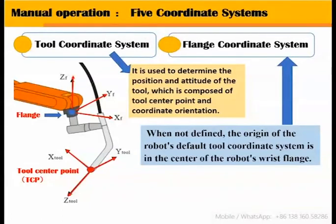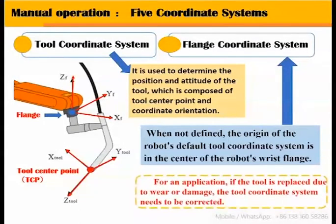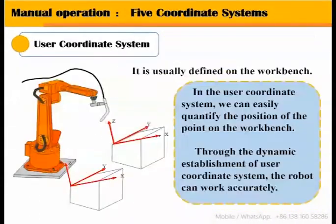The tool coordinate system is used to determine the position and attitude of the tool, and is composed of the tool center point and coordinate orientation. When not defined, the origin of the robot's default tool coordinate system is at the center of the robot's wrist flange — this is called the flange coordinate system. For an application, if the tool is replaced due to wear or damage, the tool coordinate system needs to be corrected.